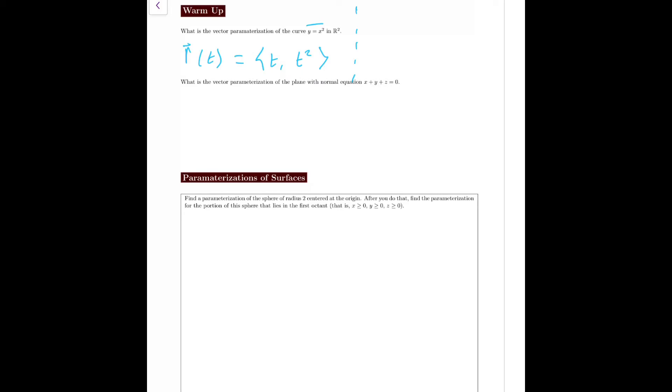Let me do another example. Let's say we want to find the parameterization of the circle of radius one centered at zero zero. This does not give y as a function of x, but we know that the parameterization is going to be r of t equals cosine t, sine t. So two things to observe here: one, there's not really just a general method that says for any curve in R² here's how you find a vector parameterization. We had to do two different things for each of these examples.